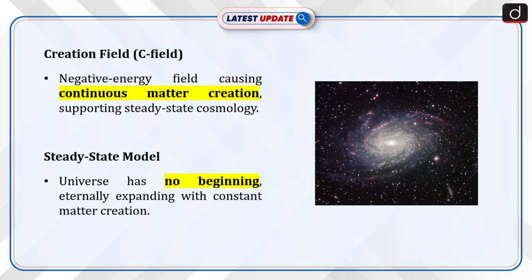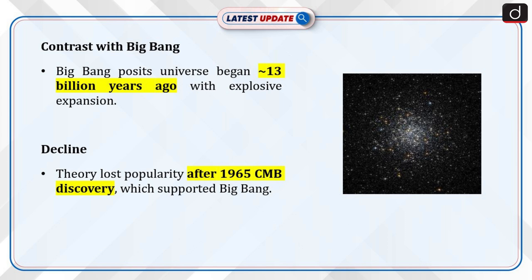The theory introduced the concept of a creation field, or C-field, a negative energy field causing the continuous creation of matter in the universe. This C-field supported the steady-state cosmology model, suggesting the universe has no beginning and is eternally expanding with constant matter creation. The steady-state model contrasts with the Big Bang theory.